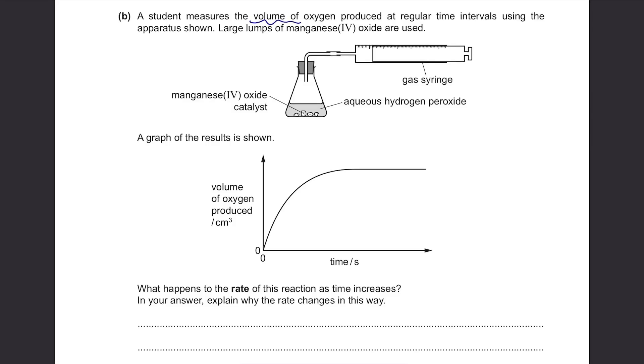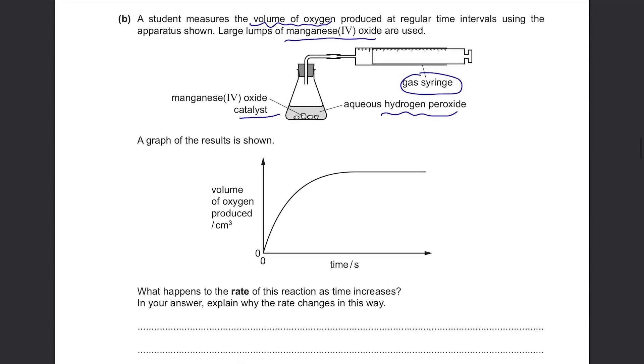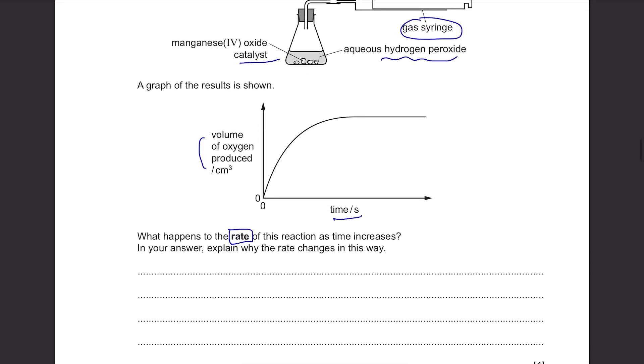Part B: A student measures the volume of oxygen produced at regular time intervals using the apparatus shown. Large lumps of MnO4 are used. The catalyst is placed here. This is the aqueous hydrogen peroxide, and the decomposition of this substance produces oxygen. They put a gas syringe here to measure the volume of oxygen produced. A graph of the results is shown. It's the volume of oxygen produced against the time. What happens to the rate of this reaction as time increases? Pay attention that they asked for the rate. The rate is not given, so you need to find the rate from this graph.